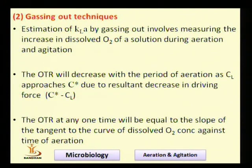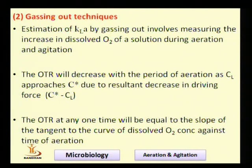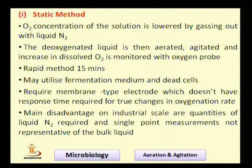The method used at the industrial level is the gassing-out technique, where oxygen concentration is reduced to a minimum level and then aeration and agitation are carried out to determine the transfer rate. The goal is to obtain an accurate value of aeration efficiency. In the static method, fermentation broth is used and aeration and agitation are performed to find the kLa value of the system.